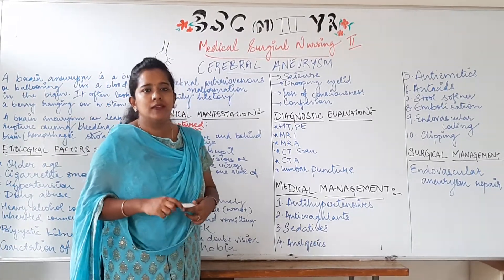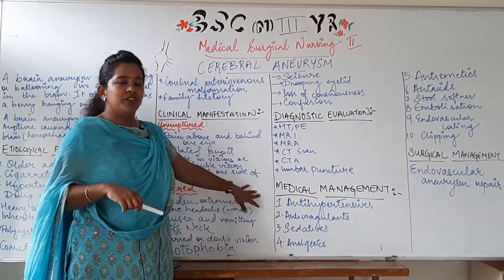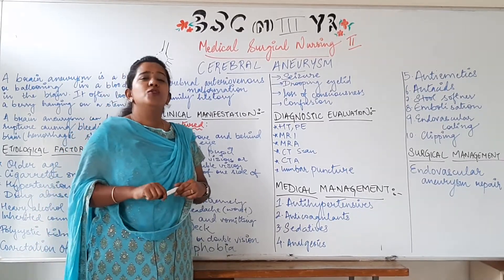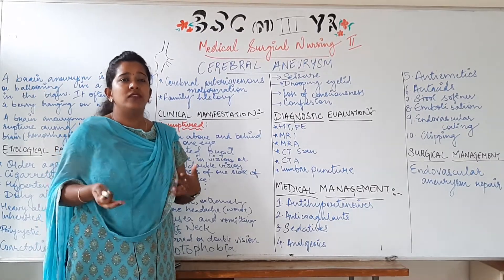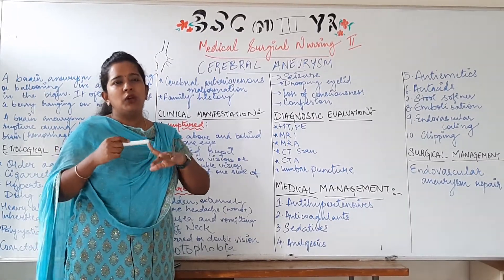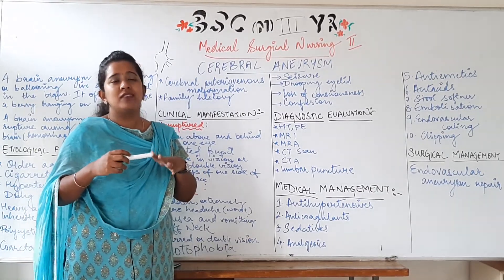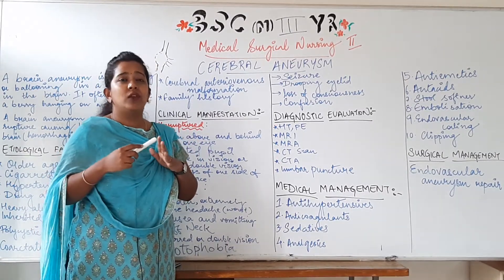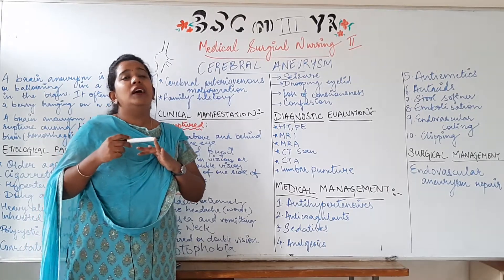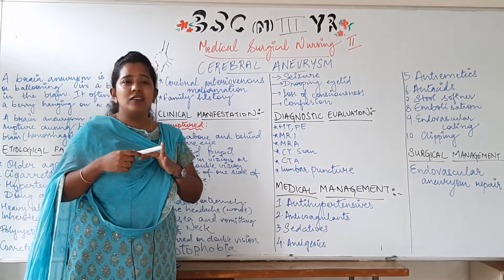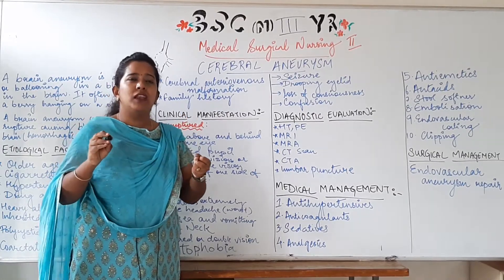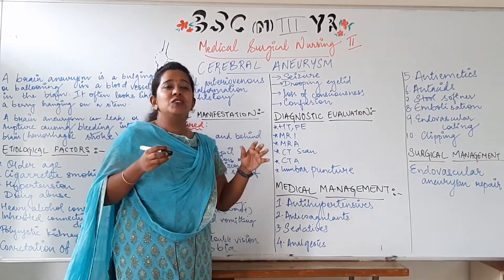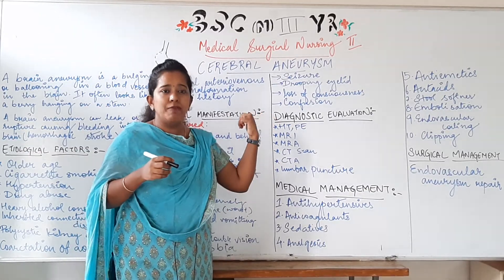Next we will move on to medical management — some chemicals and procedures that can be done without surgery. For symptomatic treatment: if pain is high, we give analgesics; for nausea and vomiting, antiemetics; if there is thrombosis or embolism, anticoagulants are given. Anticoagulants or thrombolytics are also given prophylactically in cases of brain aneurysm, because there are chances of clotting in the distended area.